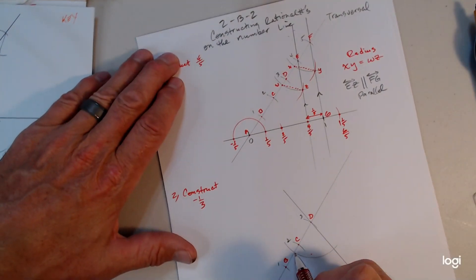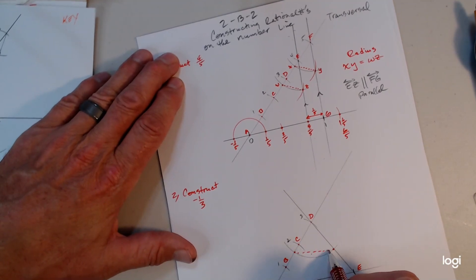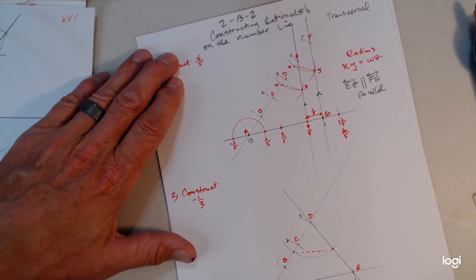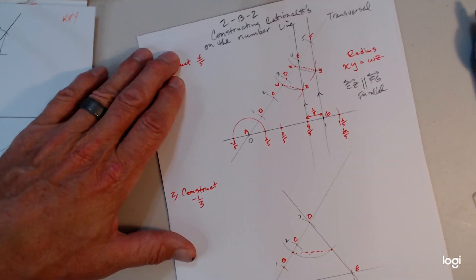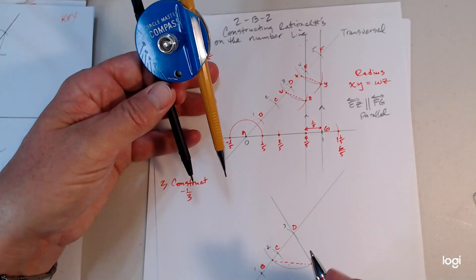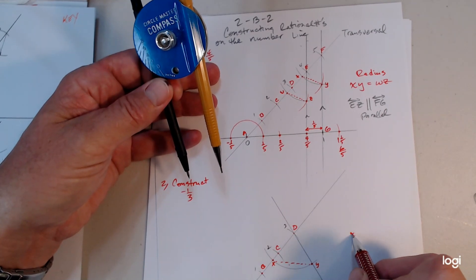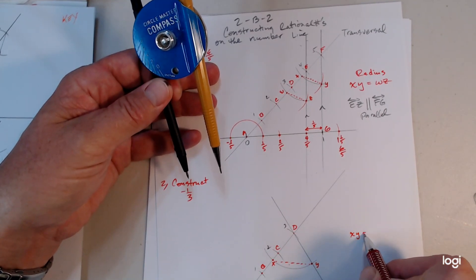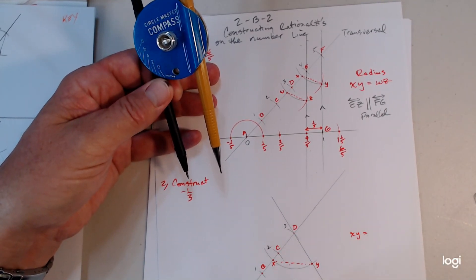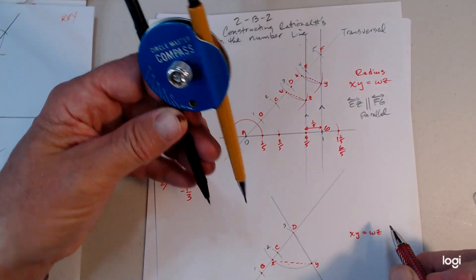I'm going to highlight the points of interest in red — that makes it easier for you to see. I have to readjust my compass here and adjust it from X to Y. Remember: X to Y equals W to Z. Z is going to be over here, just like in my previous construction.